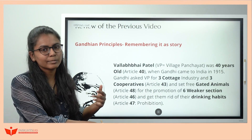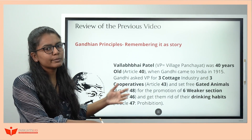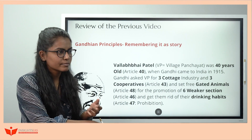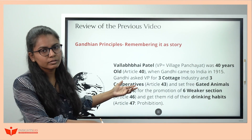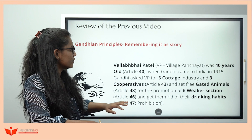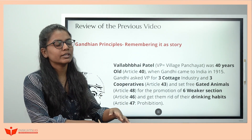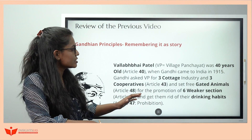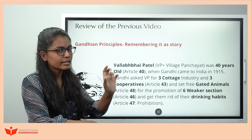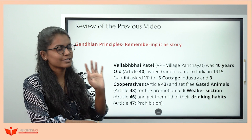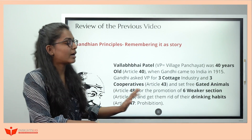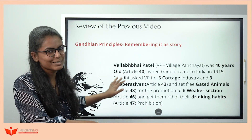I made a story to remember Gandhian articles. When Gandhi came to India he asked Vallabh Bhai Patel for three cottage industries and three cooperatives — Article 43. Then to set free all gated animals — Article 48. Then to promote weaker sections — Article 46. And to bring prohibition — Article 47. The story doesn't make much sense but it helps remember the articles!